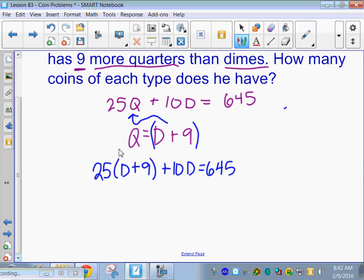Alright. So, I'm going to distribute here 25 times D is 25D. 25 times 9 is 225. Okay. Thanks. Plus, oh, I forgot a D, you guys. 25D. Alright. Plus 10D equals 645.